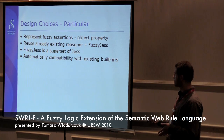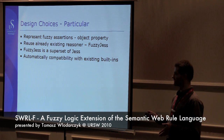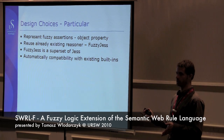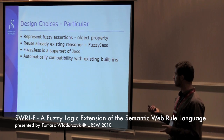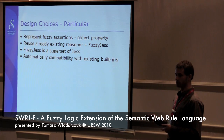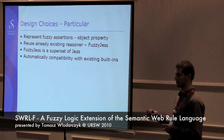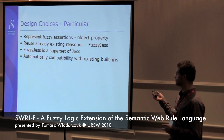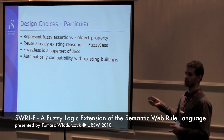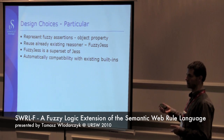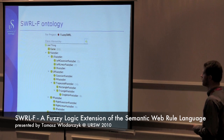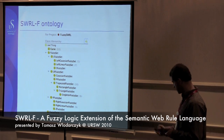In particular, we represent fuzzy assertions as an object property — we were also thinking about using a datatype property, but that was more work and looked worse, so we decided on object property, which I will show in a moment. We reuse an already existing rule reasoner, namely FuzzyJess, to actually execute our rules. Since FuzzyJess is a superset of Jess, we can utilize all the work done in terms of the SWIRL-Jess tab in Protege, and this is basically an extension of that tab.